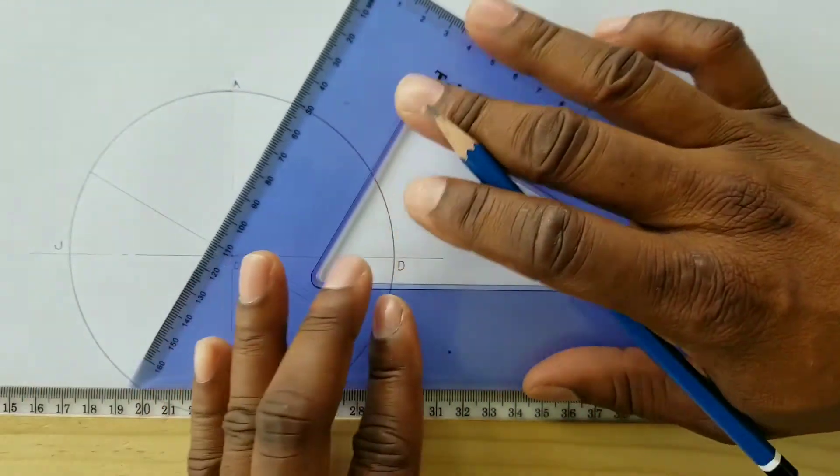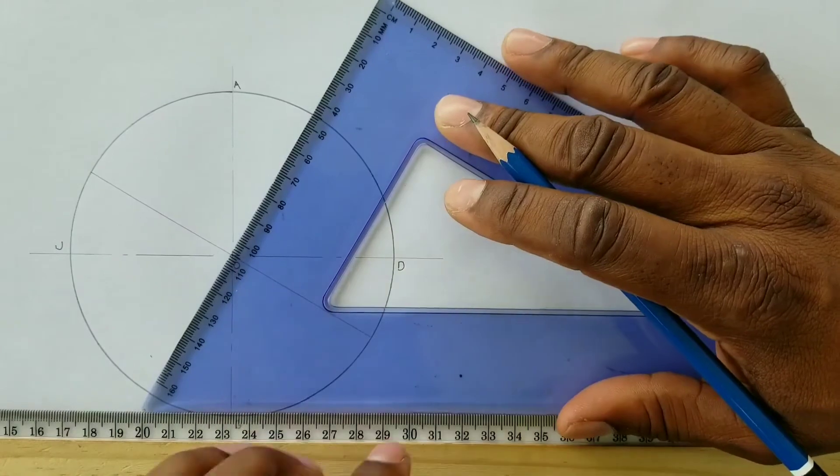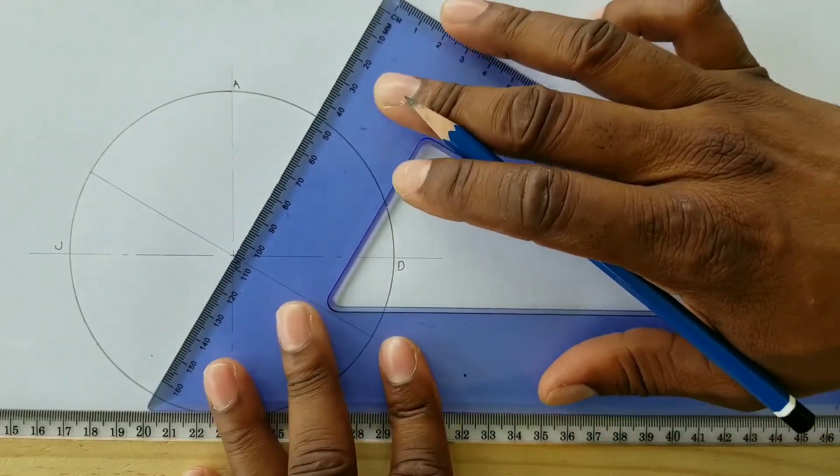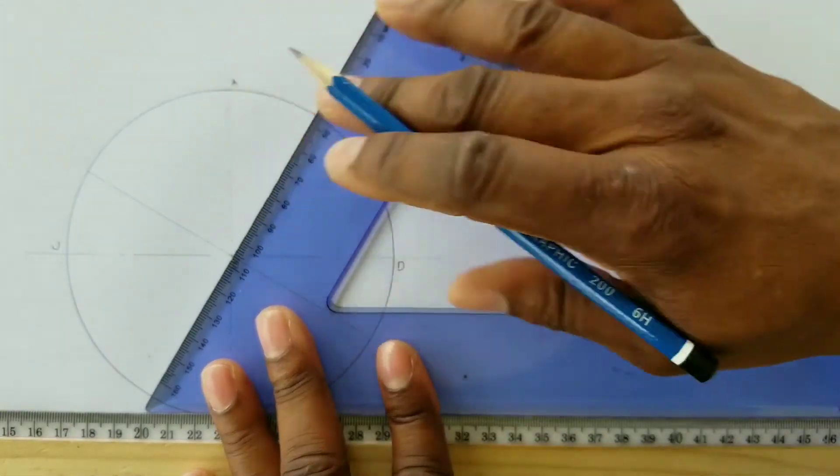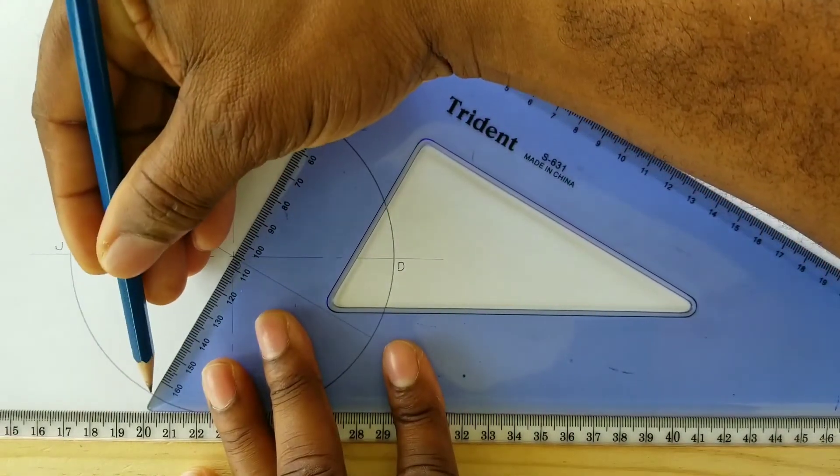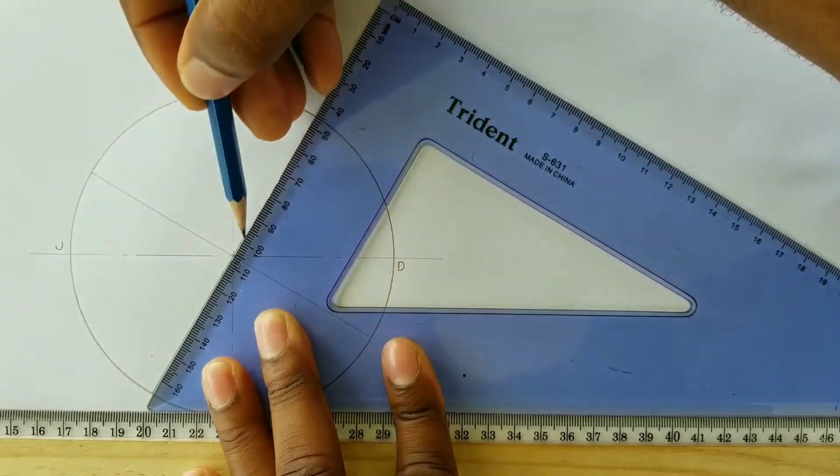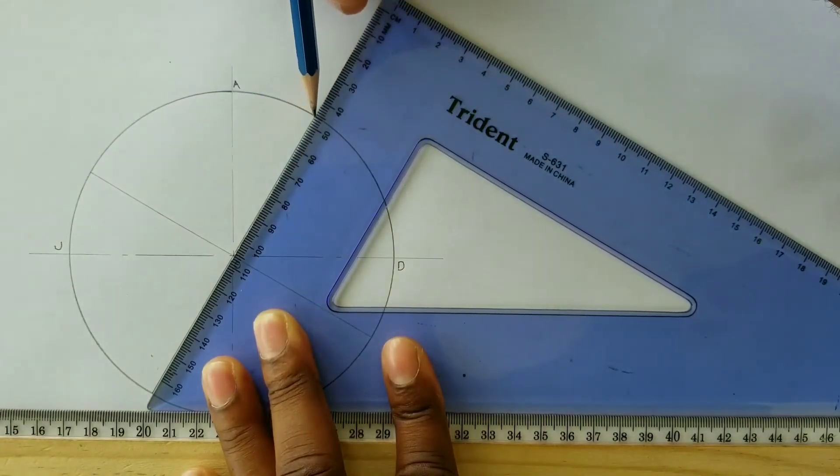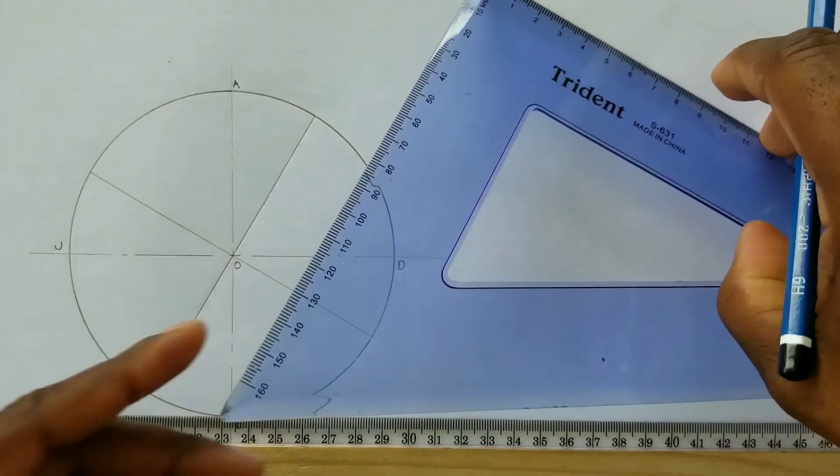We will now use the 60-degree side of our set square sitting on top of our T-square and we will repeat the procedure.